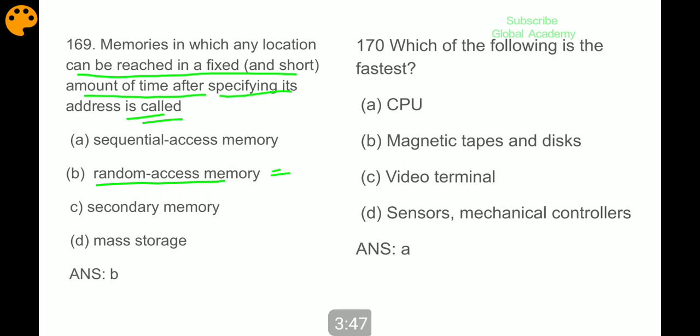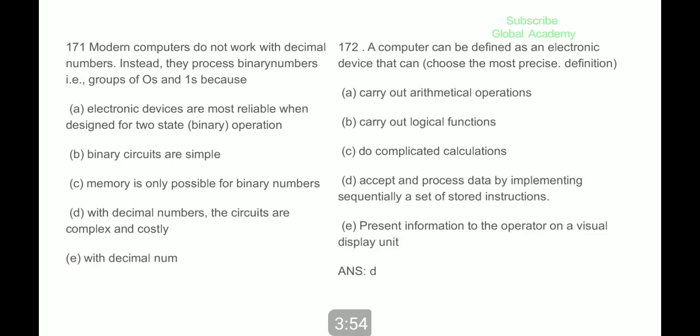Which of the following is the fastest? CPU is the fastest. Modern computers do not work with decimal numbers. Instead they process binary numbers, that is groups of zeros and ones, because the circuits for decimal numbers are complex and costly.